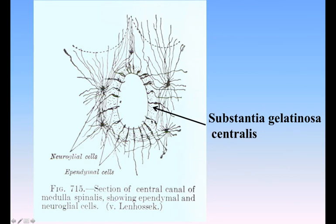Throughout the cervical and thoracic regions, the central canal is situated in the anterior third of the medulla spinalis. In the lumbar enlargement it is near the middle, and in the conus medullaris it approaches the posterior surface. It is filled with cerebrospinal fluid and lined by ciliated columnar epithelium, outside of which is an encircling band of gelatinous substance, the substantia gelatinosa centralis. This gelatinous substance consists mainly of neuroglia but contains a few nerve cells and fibers. It is traversed by processes from the deep ends of the columnar ciliated cells which line the central canal.